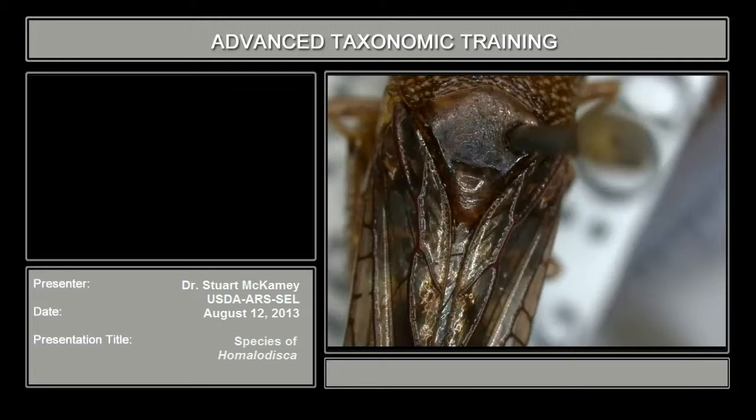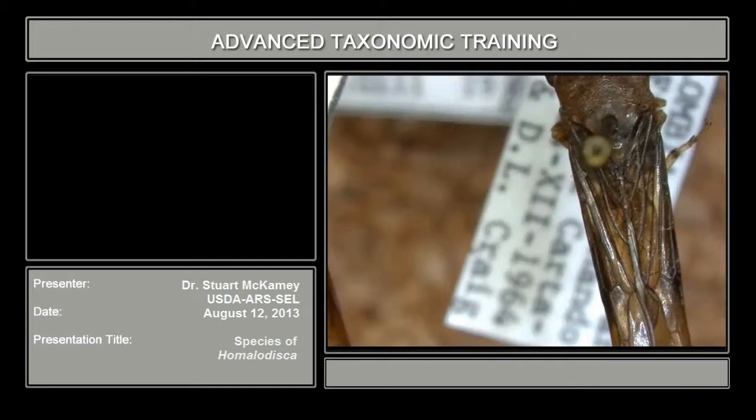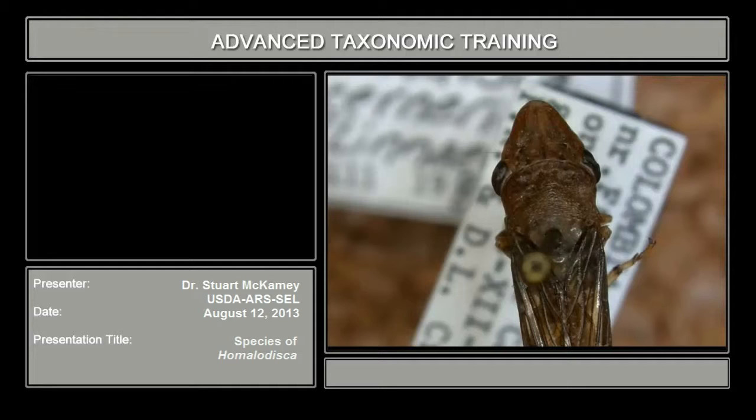These two are very similar, and then Homalodisca coagulata is also similar, but not as similar as the others. This was intercepted in Mexico, even though it's not found there naturally — it's from northern South America and Brazil. It's a serious vector of citrus chlorosis in the orange groves there, so we really want to keep this out of the U.S.